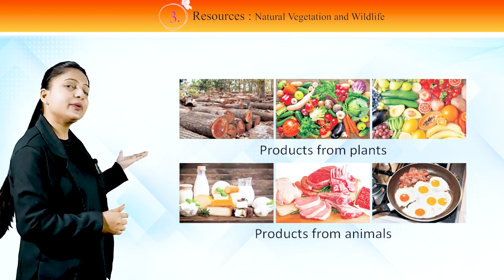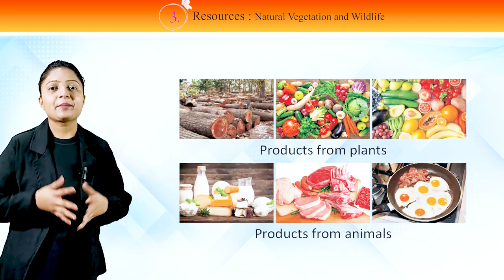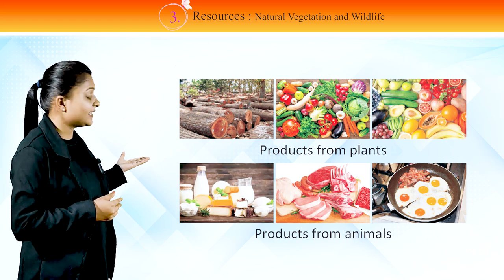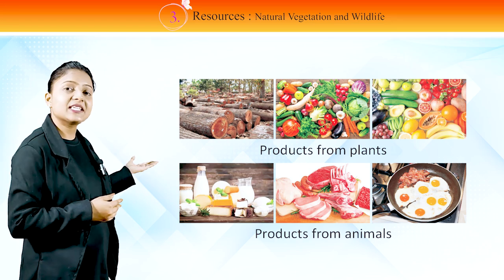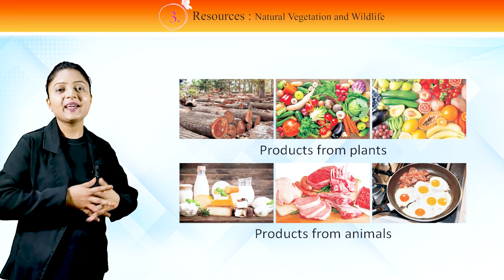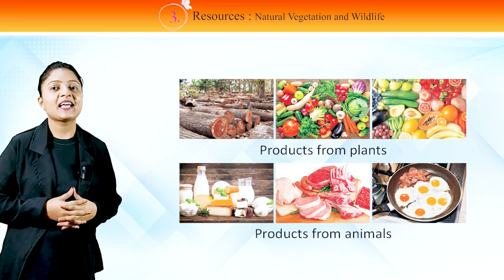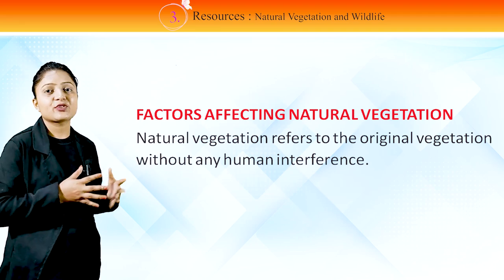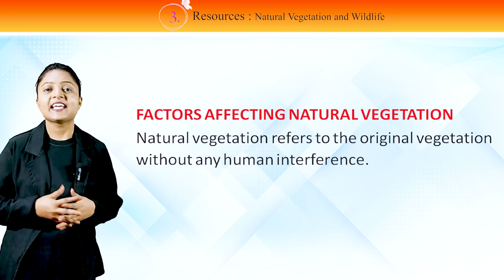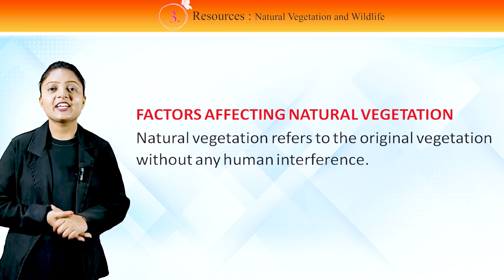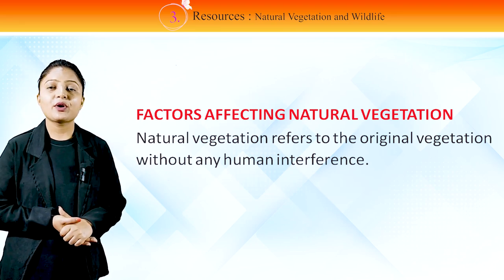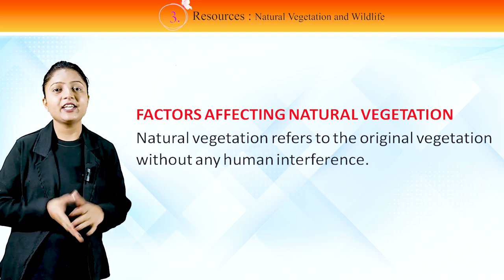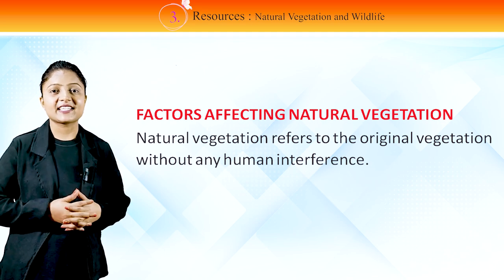In this picture, you can see products from plants, and in this one, you can see products from animals. Natural vegetation refers to the original vegetation without any human interference.